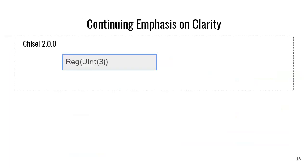This is an older slide, but I love it. We have a continuing emphasis on clarity — we want to make the language easy to use, and that's hard because people coming in often don't know Scala, they don't know Chisel, so it's all confusing. We made a few mistakes in Chisel 2 that are now fixed in Chisel 3. Here we have a register — we pass in uint and then 3. My question is: what does this mean in Chisel 2? The first option is a register of type uint, unsigned integer, with a width of 3.